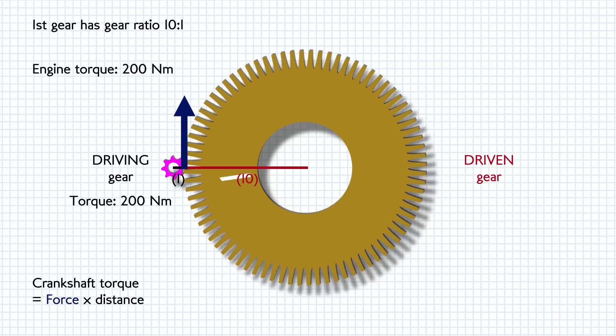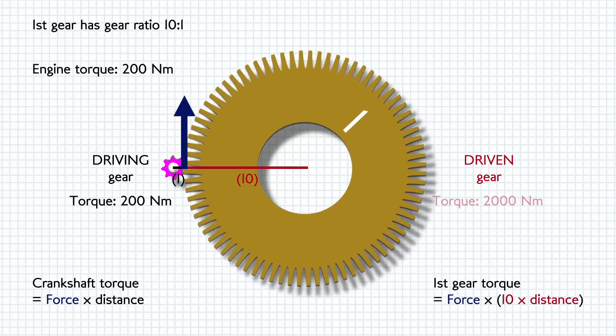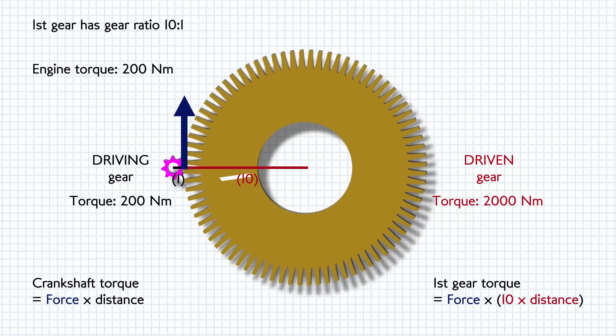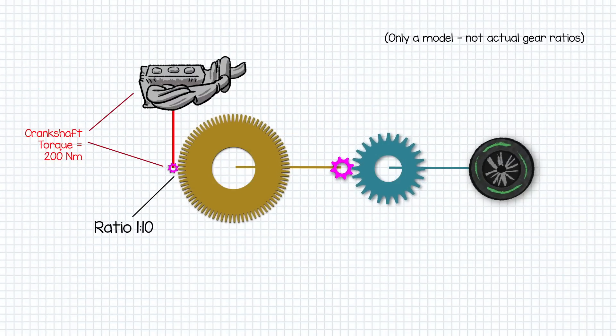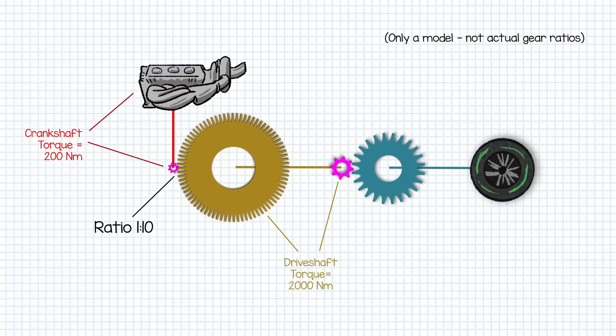But because our first gear is ten times bigger in diameter the torque delivered to it is ten times bigger than the torque at the crankshaft because as we saw if you apply a force further from the pivot it multiplies the torque you generate. This torque goes straight to the driveshaft so we could say the driveshaft has ten times as much torque as the engine is pulling at the crankshaft.